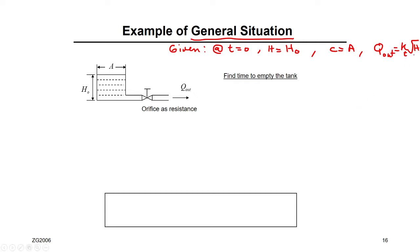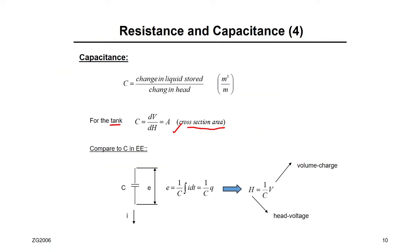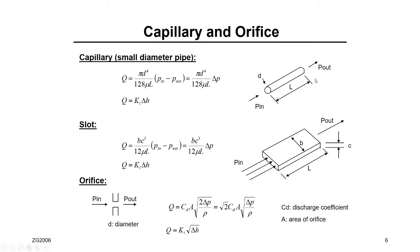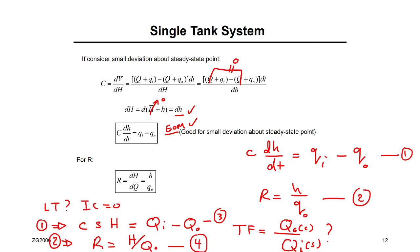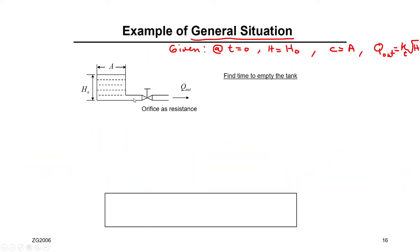We use delta H from the book. Delta H is the head before minus head after, which equals H minus 0 (atmospheric), so it simplifies to just H. So Q_out = K√H is given. Given values are: capacity A, head at T=0 equal to H₀.